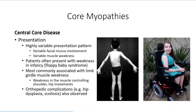Not surprisingly, when considering the genetics involved, the presentation pattern can be highly variable. Patients may present early on with hypotonia or floppy baby syndrome. The most consistent finding is a limb girdle weakness pattern, which can result in the gradual development of musculoskeletal deformities such as hip dysplasia and scoliosis.